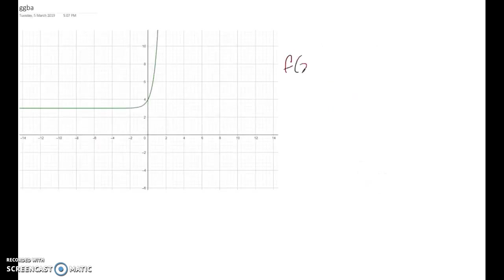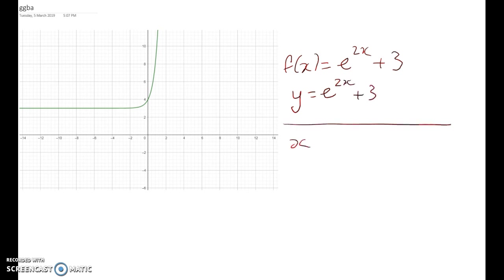So this is f(x) is equal to e to the 2x plus 3. Now to find the inverse we're going to switch over the x and y. So first we write it as y equals e to the 2x plus 3, and now we switch and we get the line through there so we know we're on the inverse. So x is equal to e to the 2y plus 3.